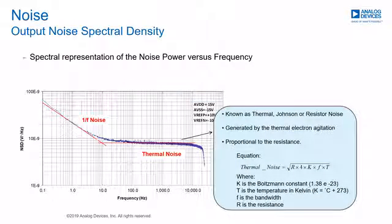Thermal noise is also known as Johnson noise or resistor noise. The noise is generated by the thermal electron agitation. This noise is proportional to the resistance as outlined by the equation on this slide. At a particular frequency, all the other terms are constant, so the noise is proportional to the resistance.